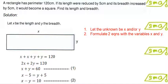The next equation is x minus 5 equals to y plus 5. Simplifying this equation, I get x minus y equals to 10. This is my second equation.